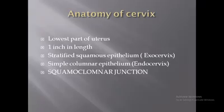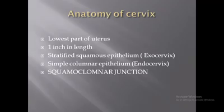Talking about the anatomy of the cervix: the cervix, as you all know, is the lowest part of the uterus. It is about one inch in length. It has two types of epithelia — stratified squamous epithelium which forms the exocervix, and simple columnar epithelium which forms the endocervix.